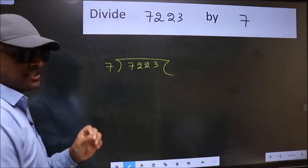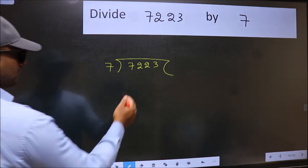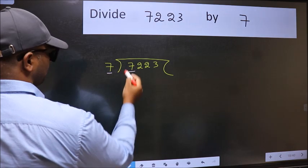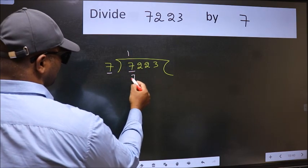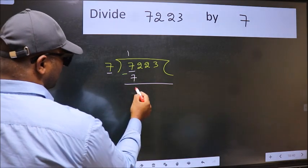This is your step 1. Next, here we have 7 and here 7. When do we get 7 in 7 table? 7 once 7. Now we should subtract. We get 0.